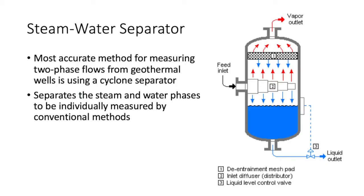A steam-water separator is the most accurate method for measuring two-phase flow systems. It separates the steam and non-condensable gases from the water, allowing each to be individually measured by conventional methods. The efficiency of the system is about 99.9 percent depending on the stability of well flows. A schematic of the steam-water cyclone separator shows how it spins the combined liquid, separating vapor into the vapor outlet and water into the liquid outlet so they can be individually measured.